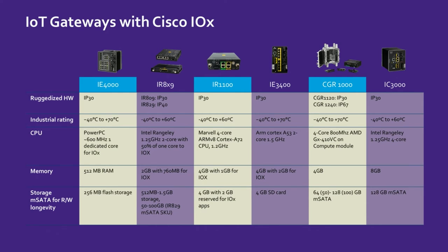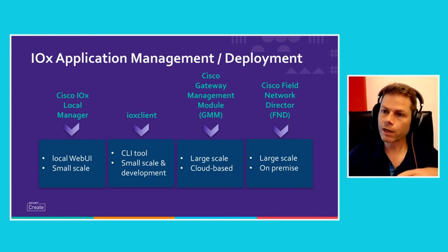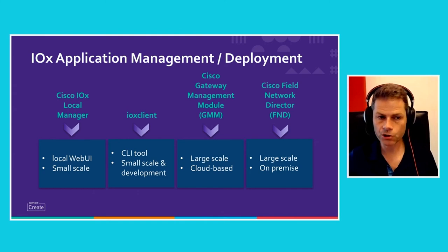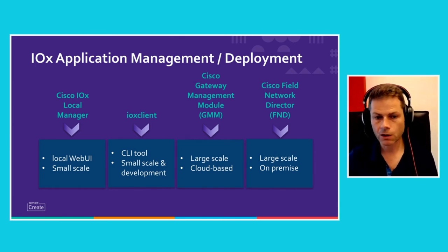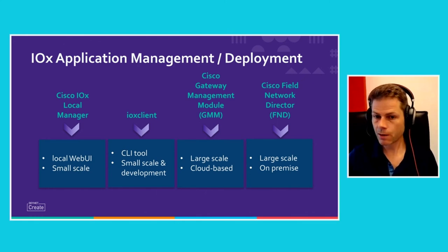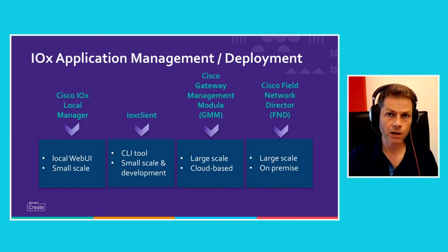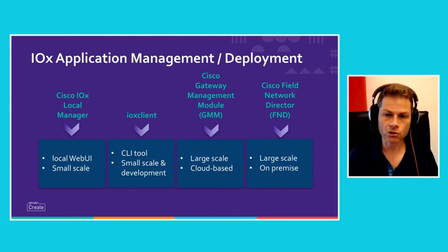All those platforms can run edge compute, and we also have enterprise platforms capable of running edge compute. Once you have an IOX application created, you can deploy it using Cisco IOX Local Manager, which runs locally on the platform with nothing to install — just enable IOX and use it. You can also use IOX Client, a binary for Windows or Linux to package and deploy applications, as well as Cisco GMM (Gateway Management Module), a cloud-based management and deployment platform, and Cisco FND (Field Network Director), an on-premises application and network management platform.